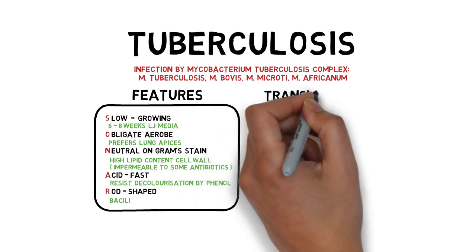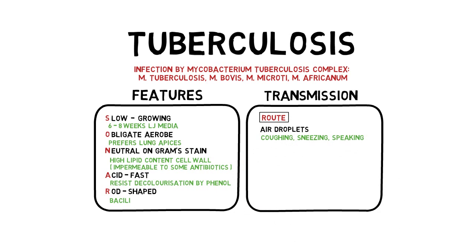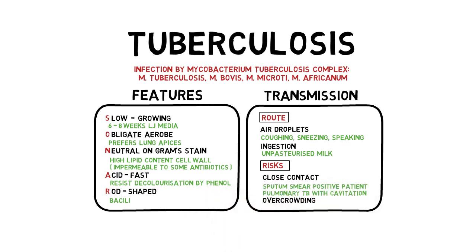TB is mainly transmitted via air droplets such as coughing and sneezing. Some cases are due to ingestion of unpasteurized milk contaminated with M. bovis. Risk of transmission is greatest with close contact with a TB patient, especially those who are sputum smear-positive with pulmonary TB and cavitation, who are relatively more infectious than smear-negative patients. Generally, we can divide tuberculosis into pulmonary, extra-pulmonary, or both.